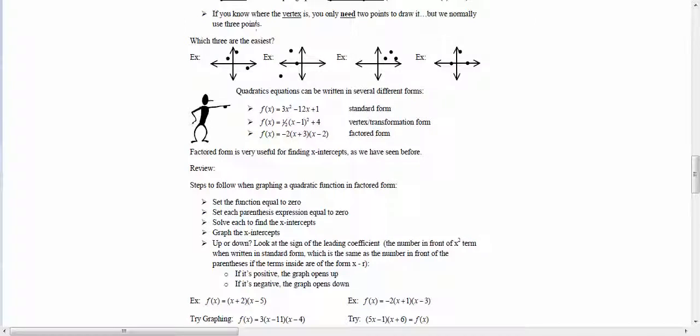We've been dealing with parabolas, which are the U-shaped things based off the parent function f of x equals x squared. If you know the vertex, then you only need two other points. Essentially you need three points to graph these things.